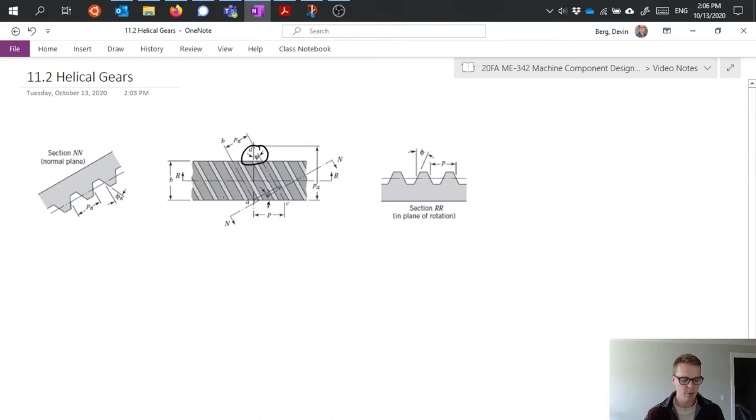In spur gears we had, for example, the pitch p, which was basically how many teeth we counted as we went around the gear. Well, that distance is slightly different if I rotate my view and look at it from this cross section that's cut here, the NN cross section, and look at my gear teeth from that direction. That distance is going to be a little bit different than it was from the other view, from the RR cross section view.